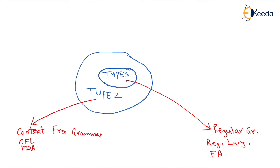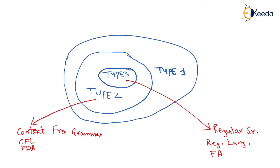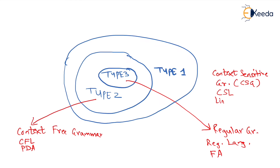Next we have Type 1 grammar. Type 1 grammar was not a part of the syllabus, but it is a part of the short note. Type 1 grammar is called a context sensitive grammar, or CSG. The language of this grammar is a context sensitive language, or CSL. The machine used for generating this is called linear bounded automata, also called LBA. All problems which cannot be solved using PDA can be done using LBA.